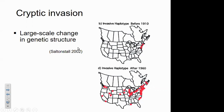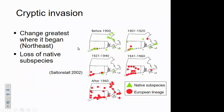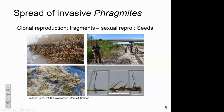That change has been greatest where it began in the Northeast. If you look at southern New England, you can see the native subspecies shown with a green symbol and the European lineage with a red symbol — over time there's been spread inland as the European lineage gained ground and the native subspecies was lost. Phragmites is able to spread by a variety of means: it's very good at clonal or asexual reproduction, with above- and below-ground fragments leading to new plants, and it can also spread through sexual reproduction by seeds.